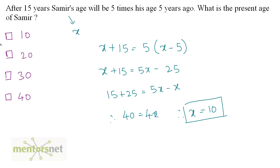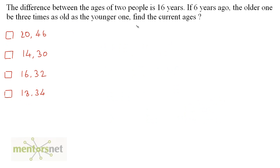So, Samir is 10 years old. Moving on to the second question. The difference between the ages of two people is 16 years. If 6 years ago, the older one be 3 times as old as the younger one, find the current ages.